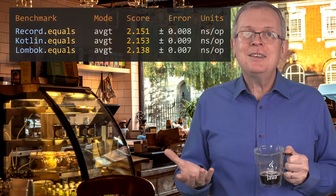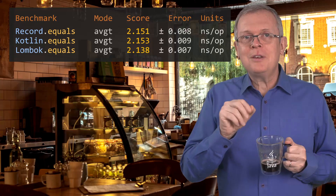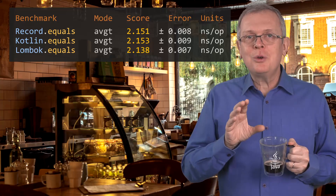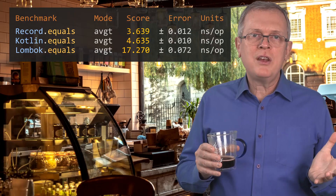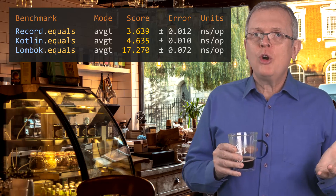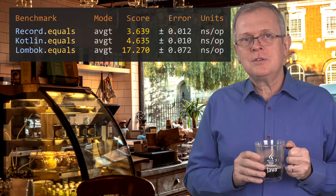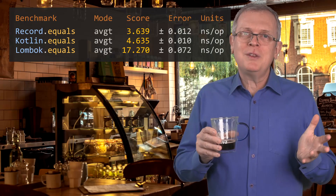For the equals method, things are a little more tricky. We have four cases. First, let us call equals on two objects that are the same instance — equal in the == sense. We expect the three implementations to behave the same because they probably compare instances with ==, and indeed they do. Second use case: call equals with two instances that have the same fields but are different instances, so the result is true. The record implementation is about 25% faster than the Kotlin one, which is only one nanosecond — a tiny difference. Lombok is way behind with an implementation that is more than five times slower.